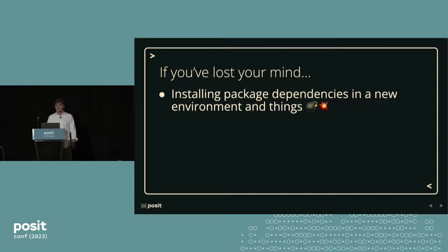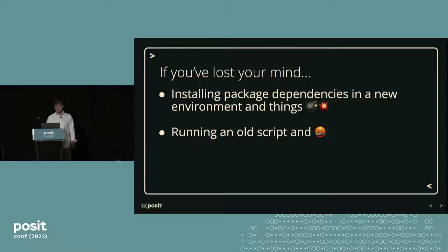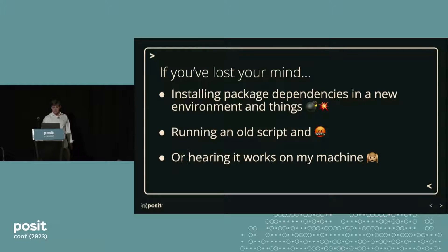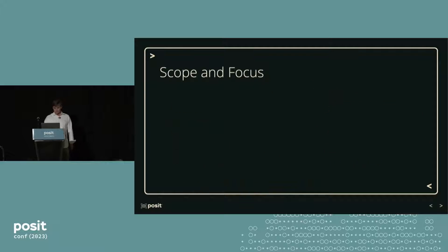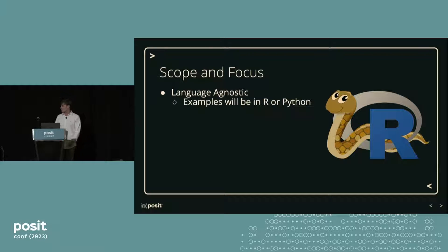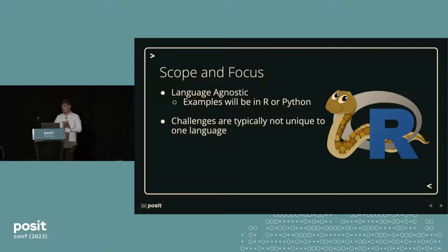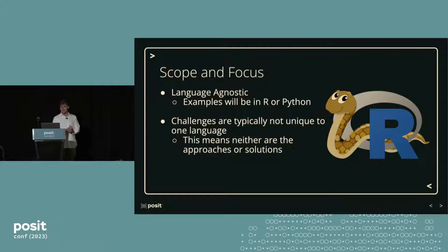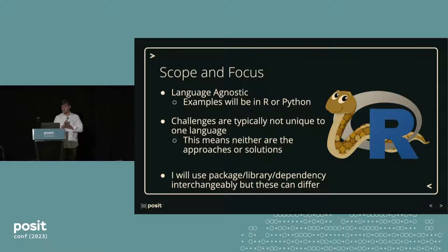So if you've ever lost your mind sorting package dependencies in a new environment and things blow up, running an old script and you get a little frustrated, hearing 'it works on my machine' from a co-worker and then you can't get it running — this talk's probably for you. Just for scope and focus, these are going to be language-agnostic challenges and solutions, but the examples will be in R and Python. Challenges are typically not unique to one language, but the good thing is that means neither are the solutions. I'm going to use package, library, and dependency interchangeably, because once you try to figure out what is what in different languages, it gets a little chaotic.